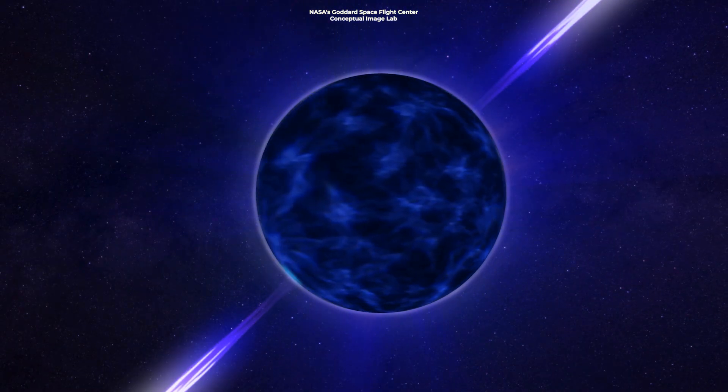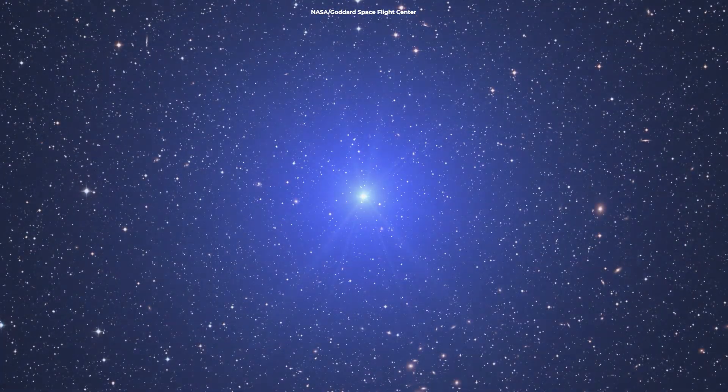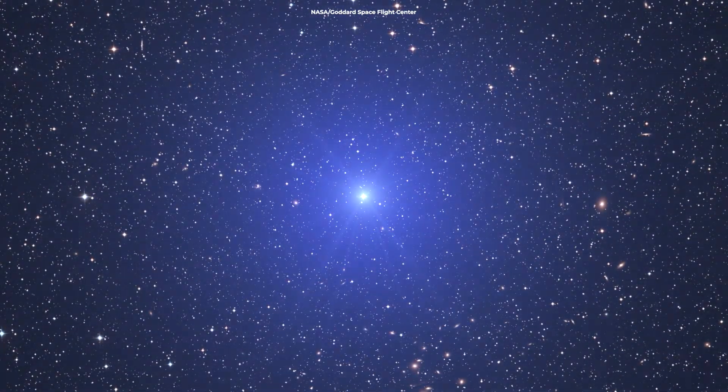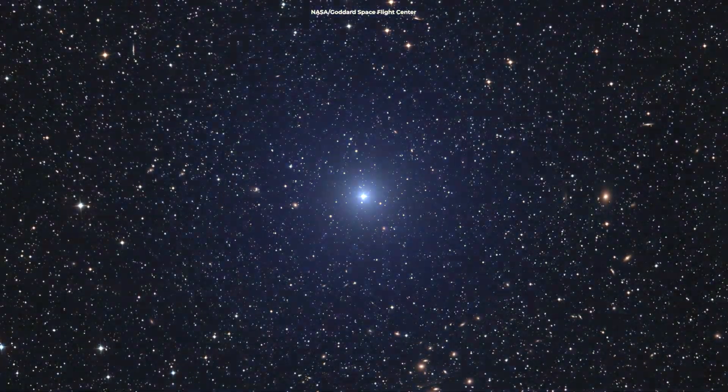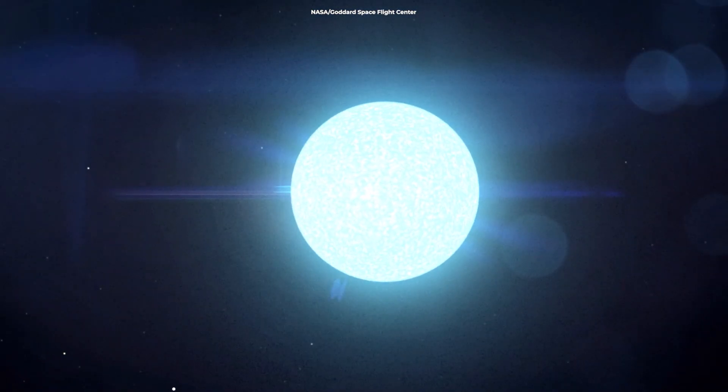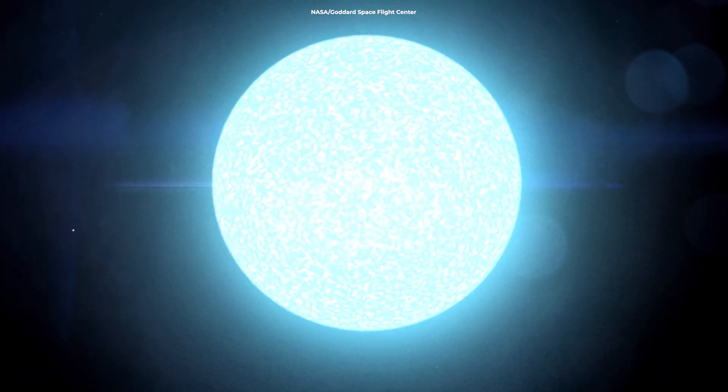Some neutron stars beam radiation from their poles as they spin. The beam sometimes faces toward us. We call this a pulsar star. Neutron stars have a thin atmosphere made primarily of hydrogen and helium.